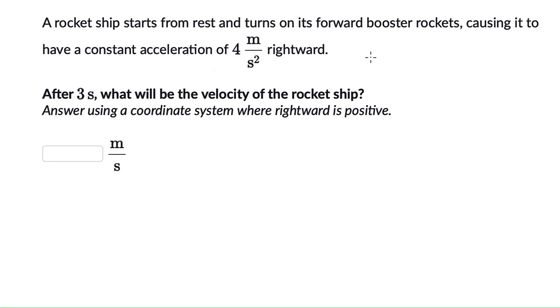A rocket ship starts from rest and turns on its forward booster rockets, causing it to have a constant acceleration of 4 m/s² rightward. We need to figure out after 3 seconds what will be the velocity of this rocket ship, and we can answer using a coordinate system where rightward is positive.